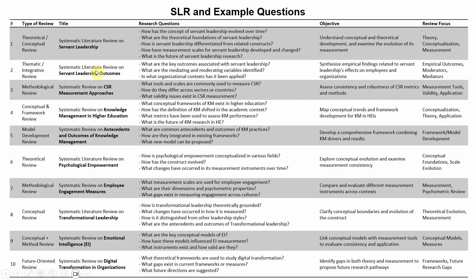Now let's look at a conceptual and framework review — a systematic review on knowledge management in higher education, with a specific focus on context. The research questions are: What conceptual frameworks of KM exist in higher education? Has the definition of KM shifted in the academic context? What metrics have been used to assess KM performance? And what is the future of KM research in higher education? The overall objective is to map conceptual trends and framework development for KM in higher education institutions, with a review focus on conceptualization, theory, and application.